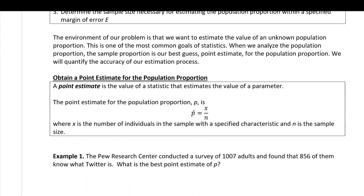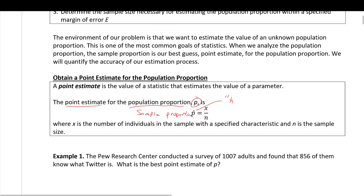A point estimate is a single value that estimates the value of a parameter. For a population proportion p, the best point estimate is the sample proportion p-hat. p-hat is x over n, where n is your sample size and x is the number of individuals in the sample with the specified characteristic.